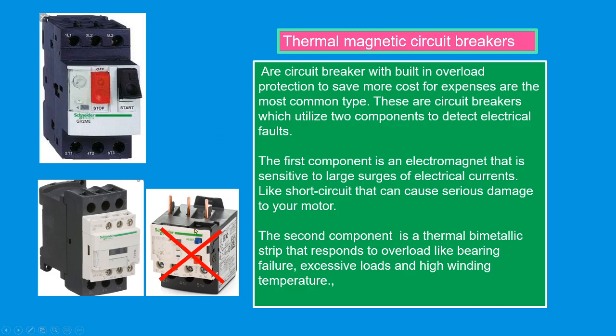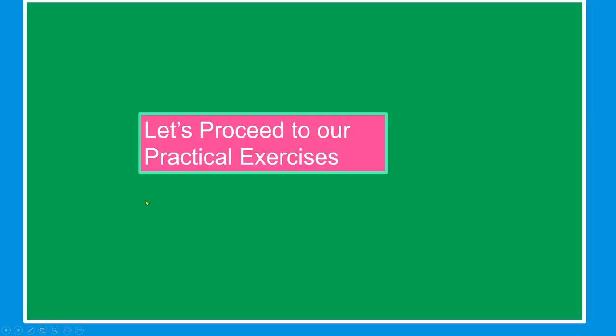In this diagram, we have already excluded the overload relay. The overload relay is already built in with this thermal magnetic circuit breaker to save money. On the plant, what we see is this thermal magnetic circuit breaker and the magnetic contactor. Let's proceed to our practical exercise.